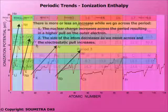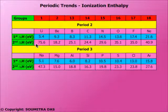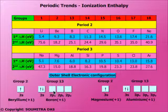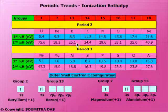Now let us see the values of the two periods separately. There is a decrease from group 2 to group 13. This is because the outer electron lies in the p orbital, which does not penetrate into the nucleus as much as s orbitals do. This fact is justified when we see that in the case of the second ionization enthalpy, where s electrons are involved in both cases, boron has a higher value.